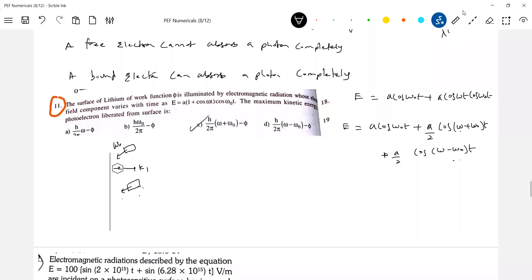So next again this photon with a frequency, how much? Omega minus omega not. Here electron K2 will come. Next another electron K3 will come. So in all the cases.